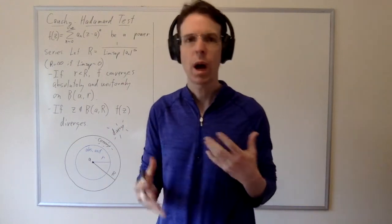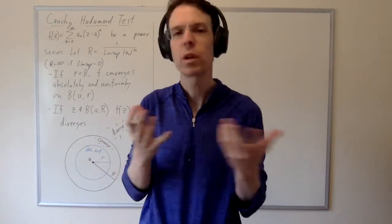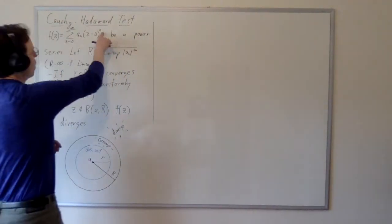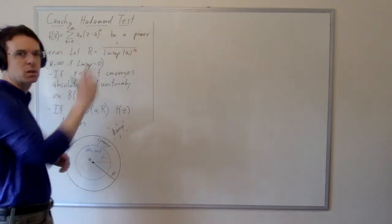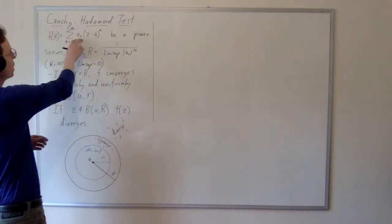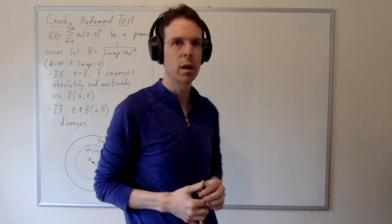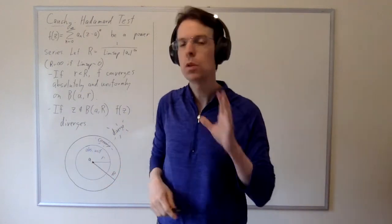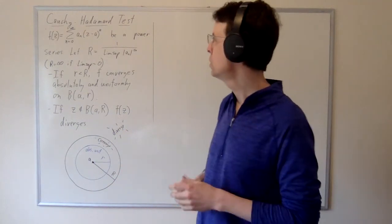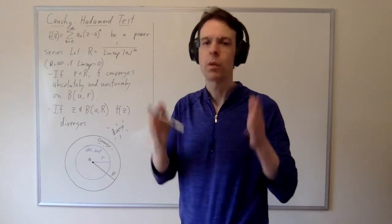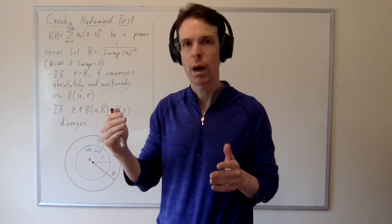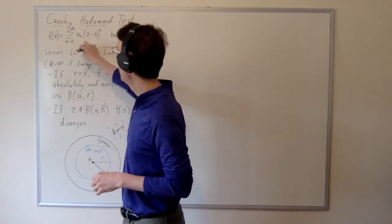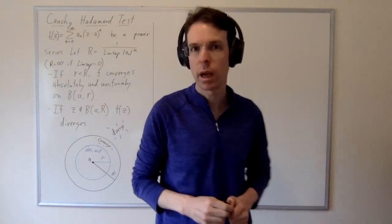What we're going to do is apply the Cauchy root test to the terms. Notice that when we take the 1 over nth power of (z minus a) to the n, that's really easy, but when we take the 1 over nth power of a_n, then who knows what we get. So the Cauchy-Hadamard test tells us: focus on the coefficients a_n and do to them exactly what you did in the root test. Take the modulus of those coefficients to the 1 over nth power and take the limsup. We're applying the root test to the coefficients and completely ignoring the (z minus a) to the n power.